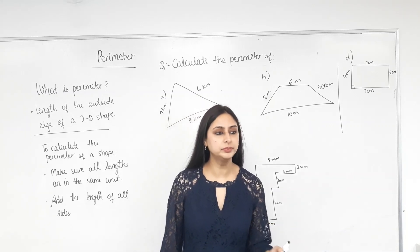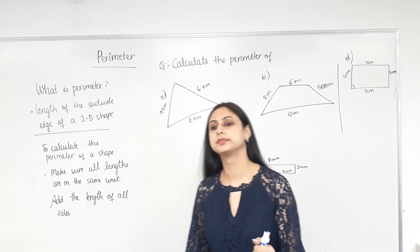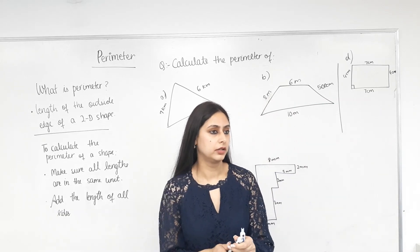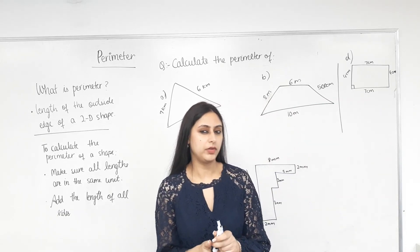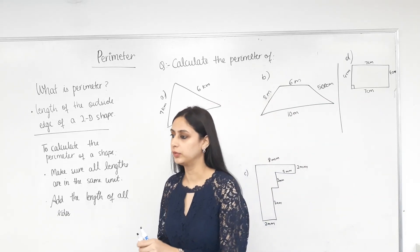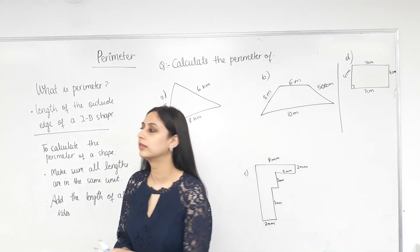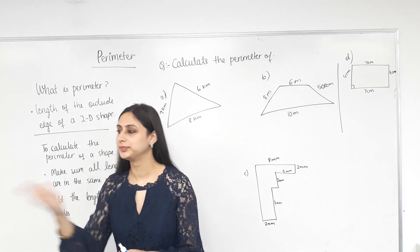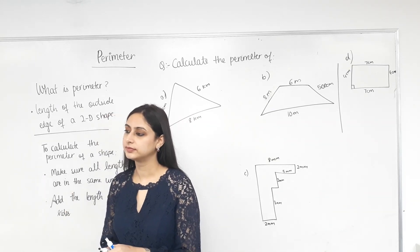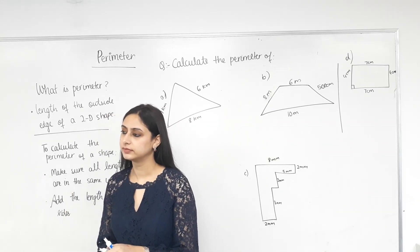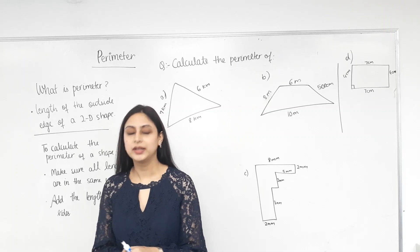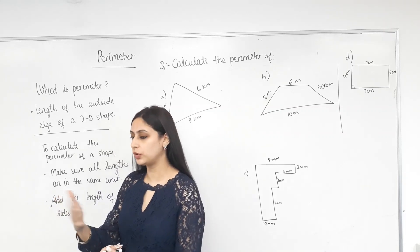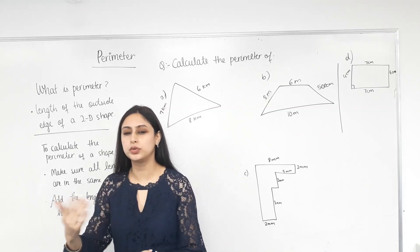Good morning. We are now moving on to perimeter. Have you heard this word before? Yes. Okay, what does it mean? It's written on the board. The length of the outside of a shape. Yep, the length of the outside of a shape. We talk about perimeter for 2D shapes.